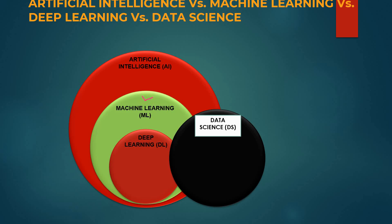Machine learning is a subset of AI. It is a technique where machines are given lots of data, they learn from that data, and make decisions without being explicitly programmed for each specific task. The machine learns patterns from data and makes predictions. A general example: when emails hit your inbox, spam filters classify non-spam and spam emails using machine learning. This is one example of machine learning as a subset of artificial intelligence.